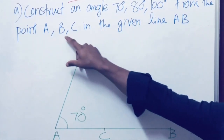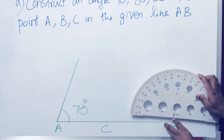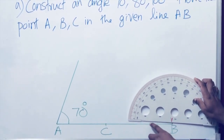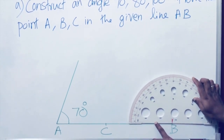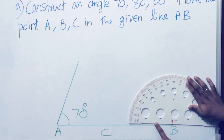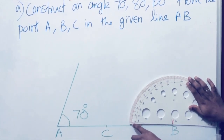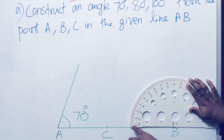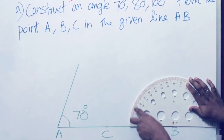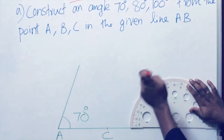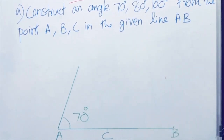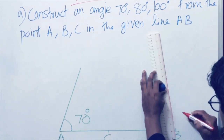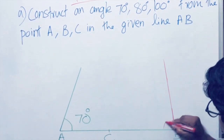Now we can construct 80 degree from the vertex B. We have to keep the protractor so that the center point coincides with vertex B and the line coincides with the baseline. Notice that the line touches the left side zero of the protractor, so you can start counting from the left side zero. Our measurement is 80 degree — here it is marked. Now join the vertex and the marking point. So this is 80 degree.